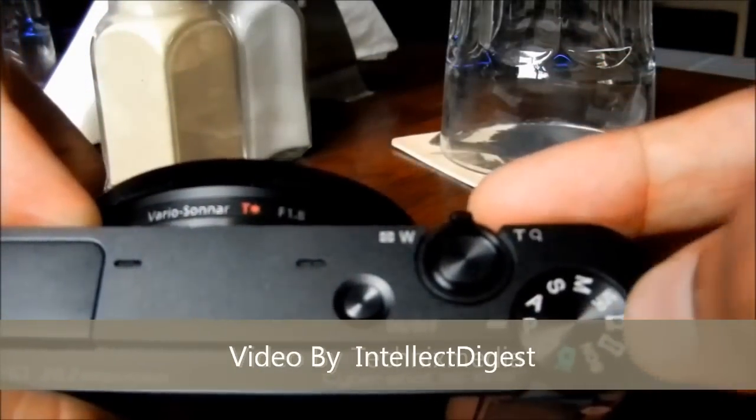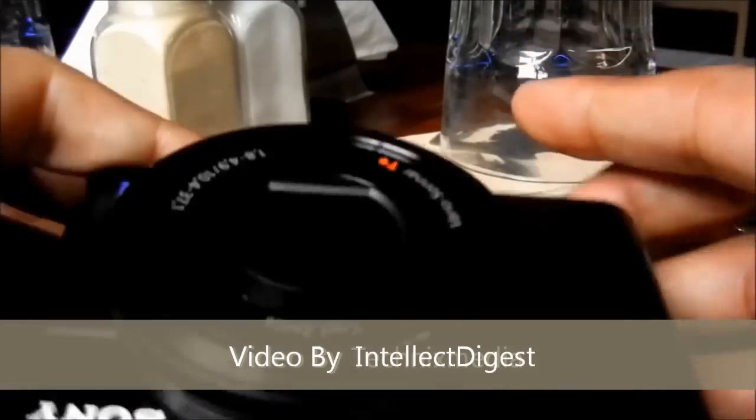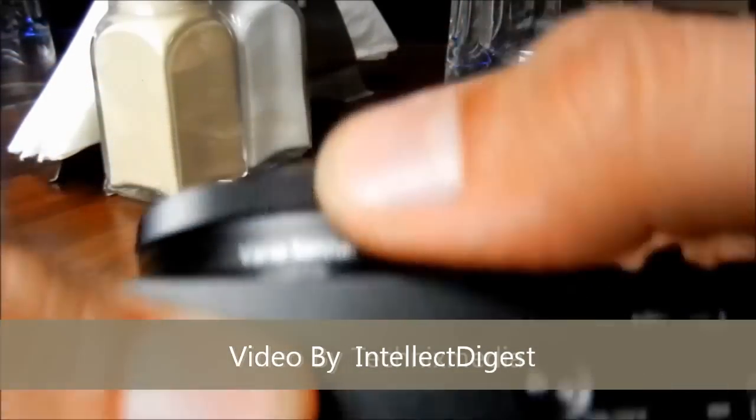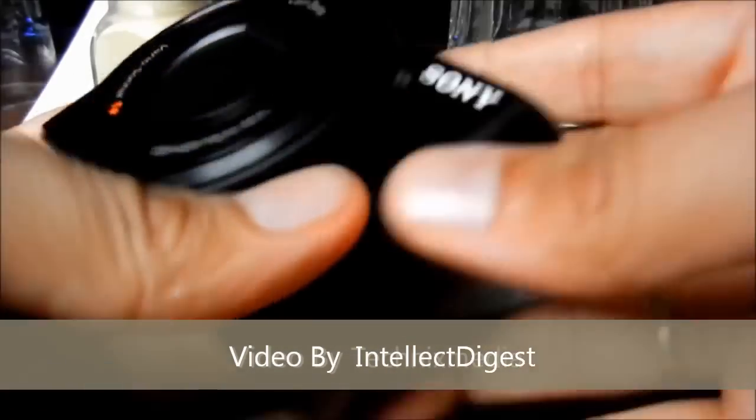On the top here you have a function selection dial. This is for zoom in, zoom out, power key. On the front this is the lens area. This is the ring which gives you options to set certain functionalities.